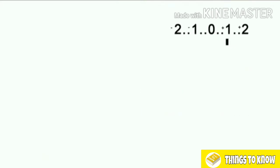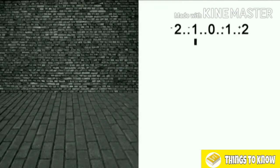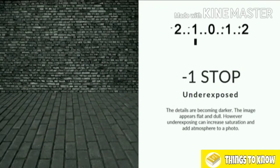Going the other way to minus one on the light meter — one stop underexposed — means half the amount of light is now coming into the scene. The image appears a little dull and flat. However, underexposing can increase saturation, make colors a little denser, a little darker, and it can add atmosphere to a photograph.